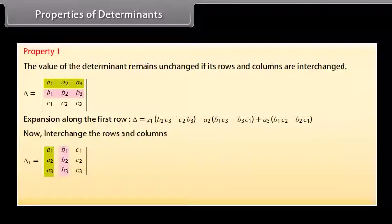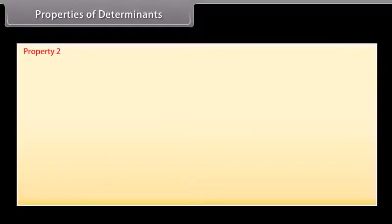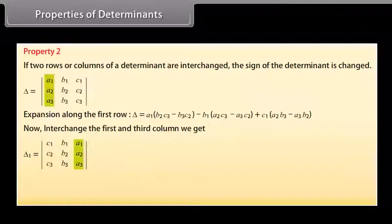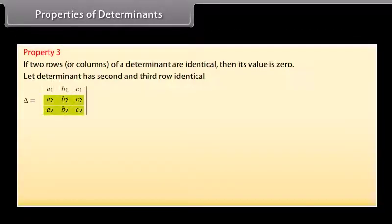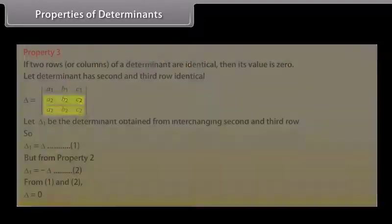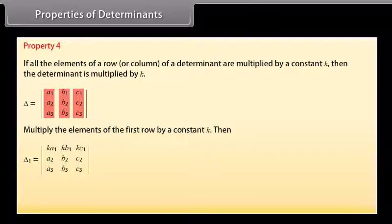Properties of determinants: Property 1 — The value of the determinant remains unchanged if its rows and columns are interchanged. Property 2 — If two rows or columns of a determinant are interchanged, the sign of the determinant is changed. Property 3 — If two rows or columns of a determinant are identical, then its value is 0. Property 4 — If all the elements of a row or column are multiplied by a constant k, then the determinant is multiplied by k.